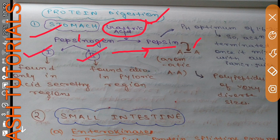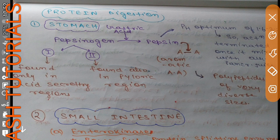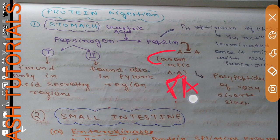Pepsinogen 1 is found mainly in acid-secreting regions, whereas pepsinogen type 2 is found in the pyloric region of the stomach, and maximal acid secretion correlates with pepsinogen 1. Pepsin hydrolyzes the bonds between aromatic amino acids — such as phenylalanine or tyrosine — and a second amino acid. The products of peptic digestion are polypeptides of various sizes.